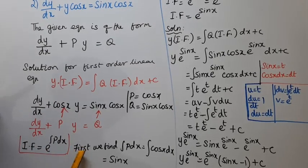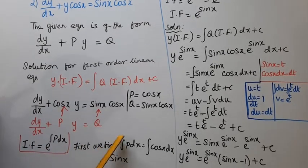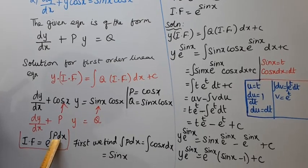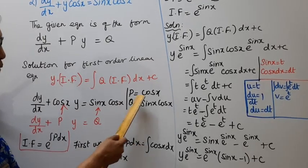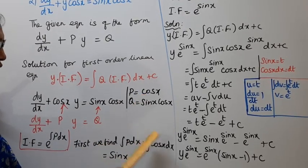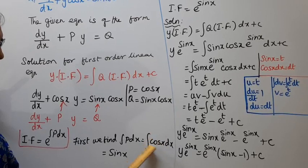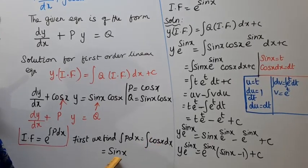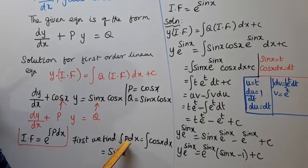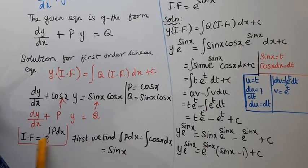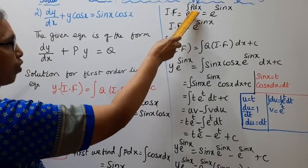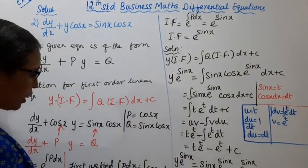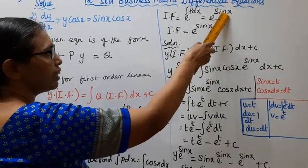First, we find ∫P dx. Since P = cos(x), we compute ∫cos(x) dx = sin(x). Therefore, the integrating factor is e^(sin x).